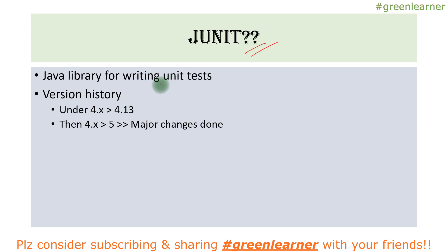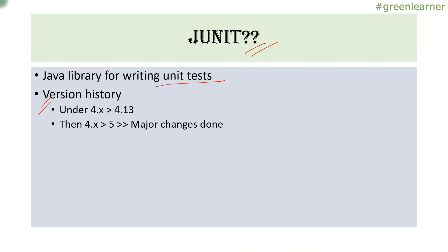JUnit is the library we are going to use for unit testing for Java applications — it is a Java library for writing unit tests. Let's talk about the version history. The latest 4.x release is 4.13, and after that it was renamed to version 5, which introduced major changes.